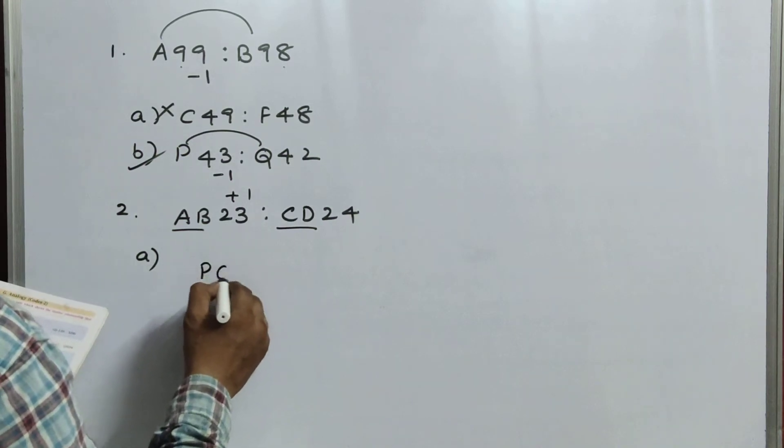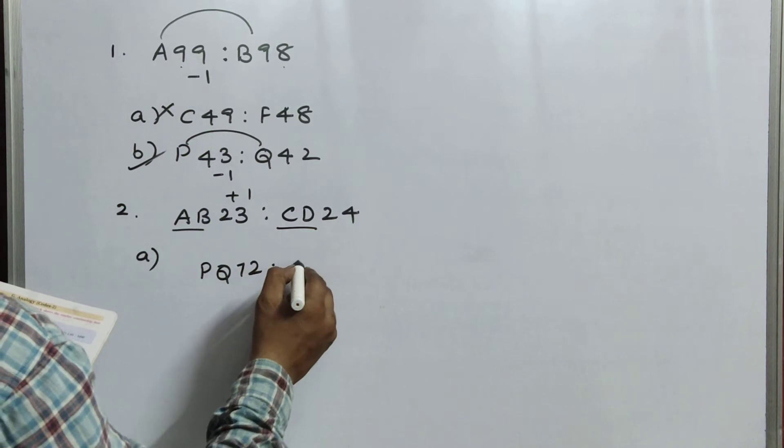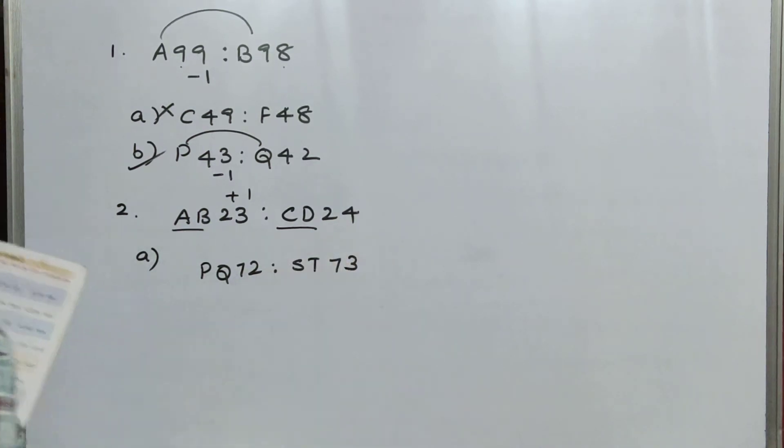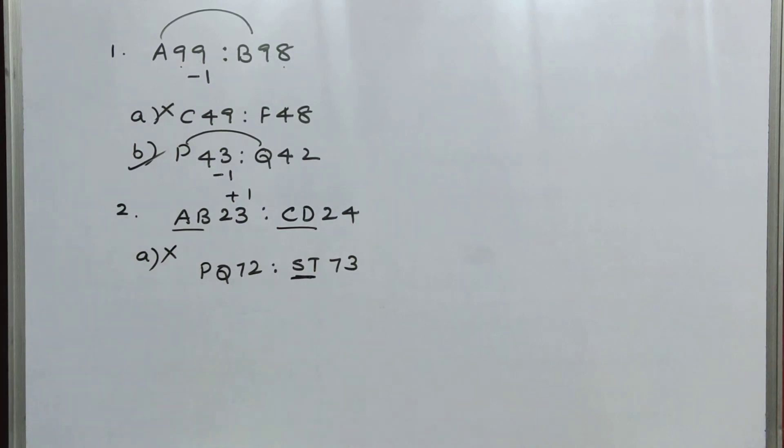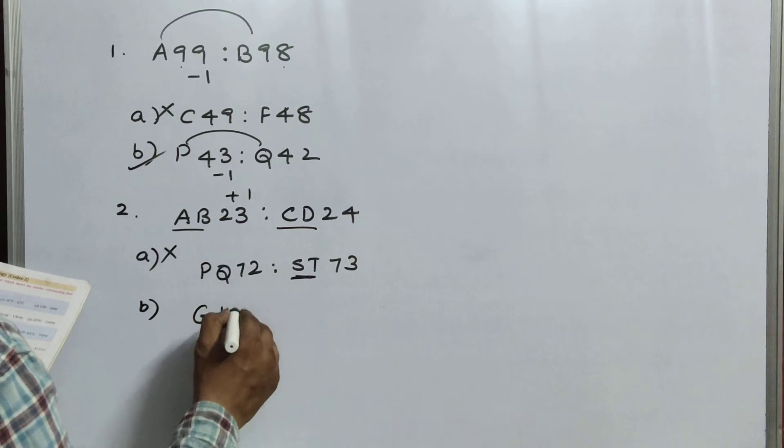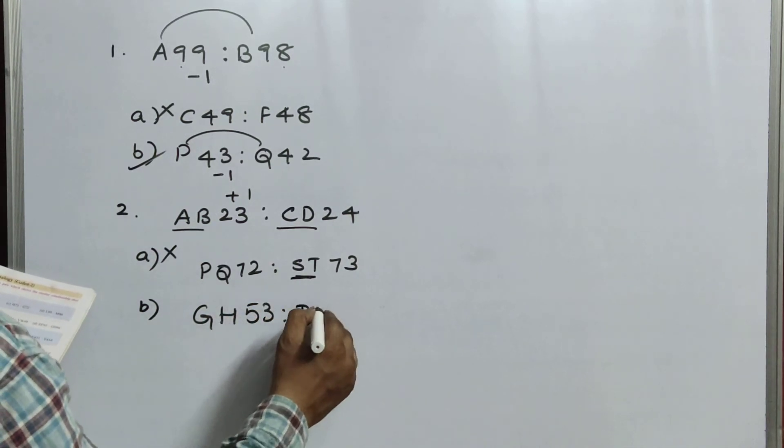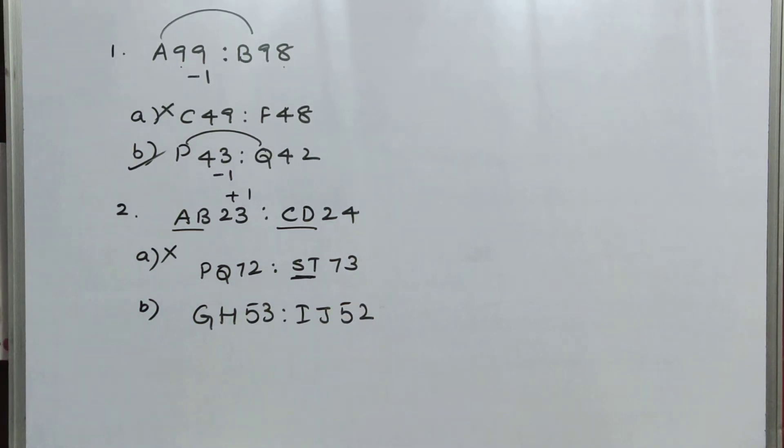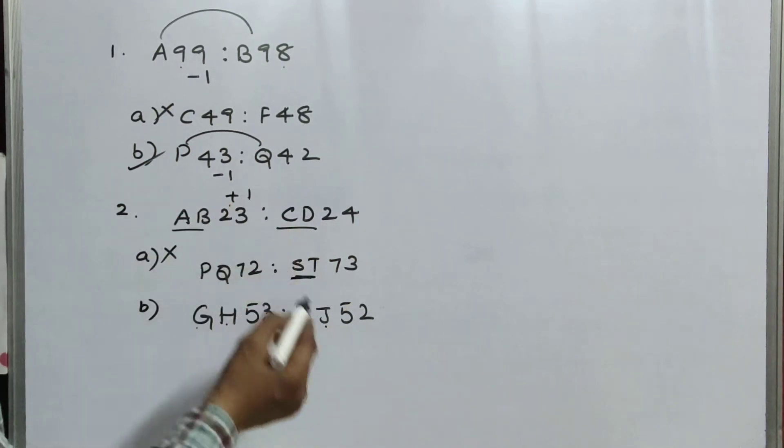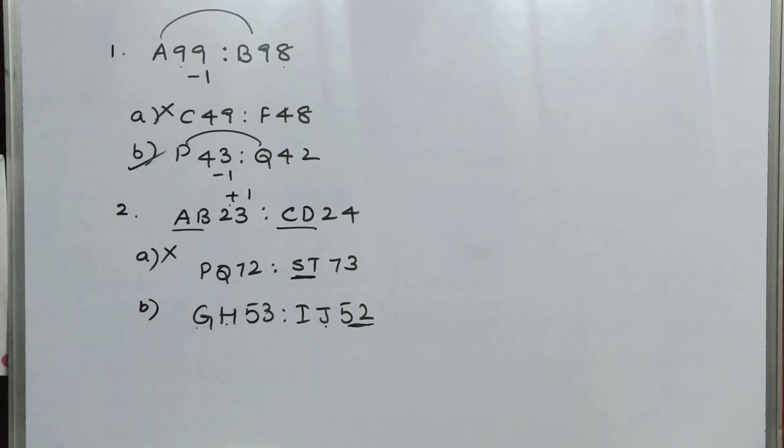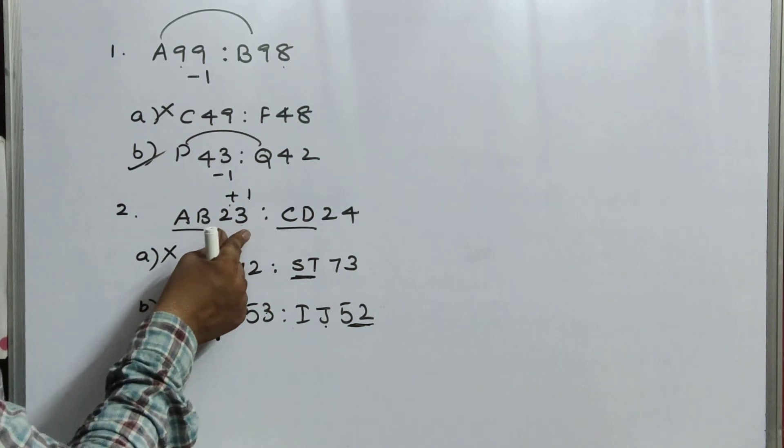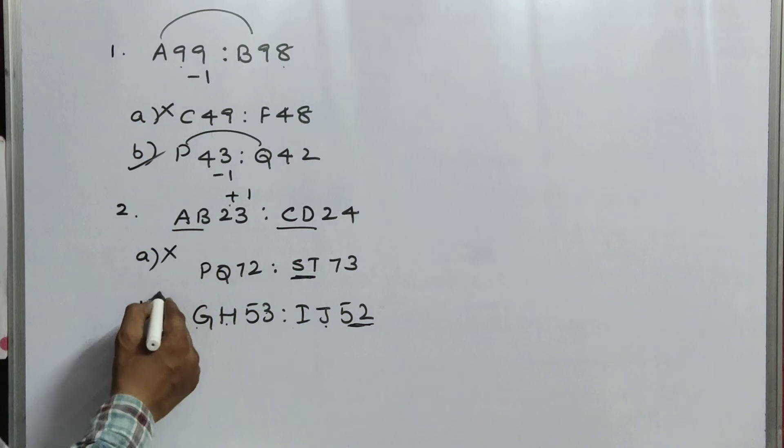Option A, PQ72 is to ST73. That means, PQ, RS should be there. Here, RS. So, option A is wrong. Next, B, GH53 is to IJ52. So, here, GHIJ. Here, alphabetically correct. Now, here, what you did numerically? 23 plus 1. But here, 53 plus 1 is 54. But here, it is 52. By seeing this observation, you'll feel that B option is correct. So, definitely, the B option is wrong. You have to even check this one also. 23 plus 1 is 24. 53 plus 1 is 54. So, option B also wrong.